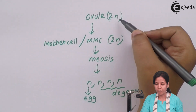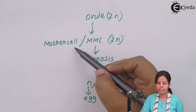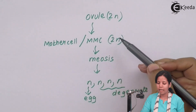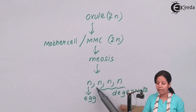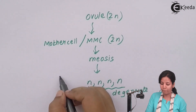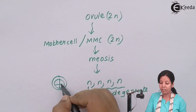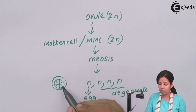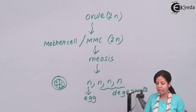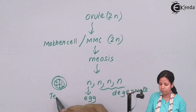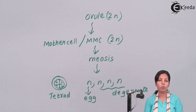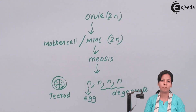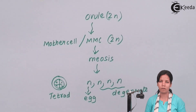To summarize: the ovule — the female structure — which is diploid, differentiates into the mother cell (MMC), which is again diploid. The MMC undergoes meiosis (reduction division) to form four haploid cells in the form of a tetrad. One of these tetrad cells will form the egg cell, and the remaining three will degenerate. This is how the egg cell or female gamete is formed.